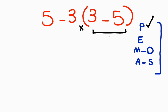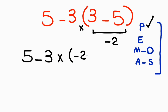Now start with the parentheses: 3 minus 5 gives us negative 2. Let's rewrite the expression: 5 minus 3 times negative 2. Now we have one multiplication and one subtraction. According to PEMDAS, multiplication and division have equal priority and higher priority than addition and subtraction.